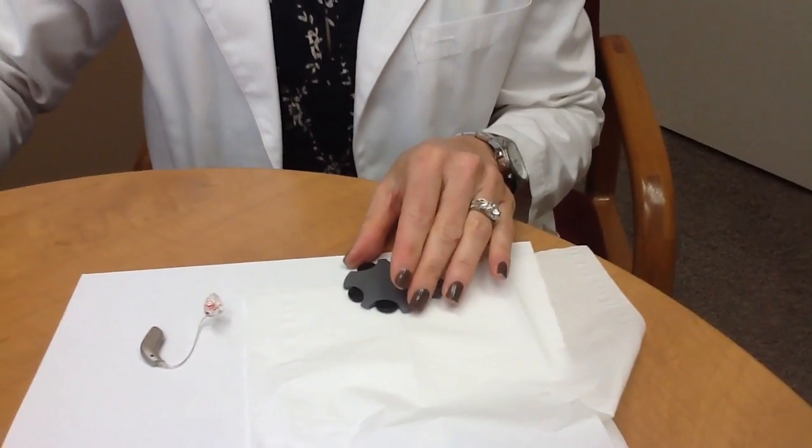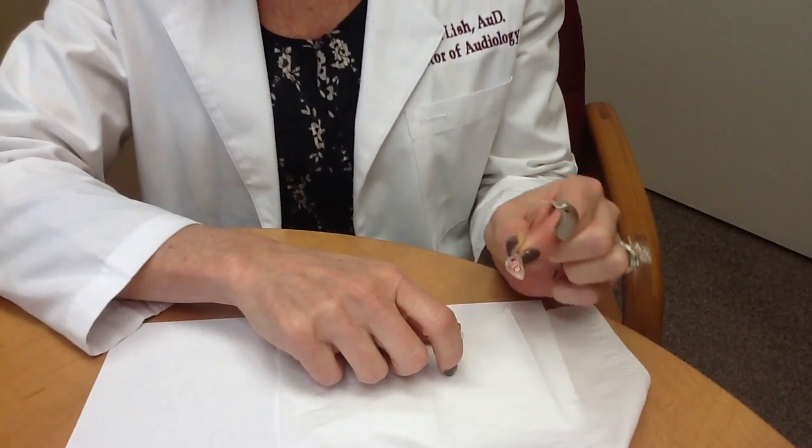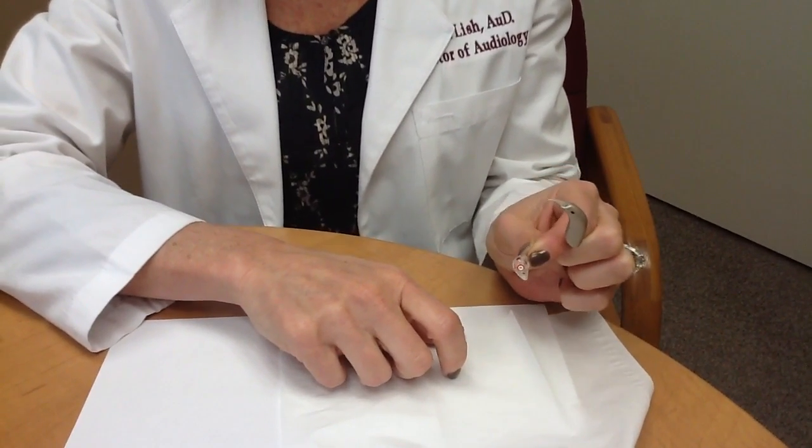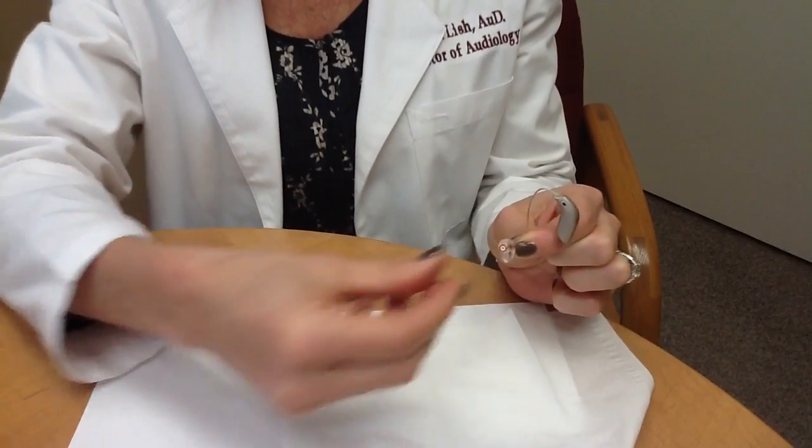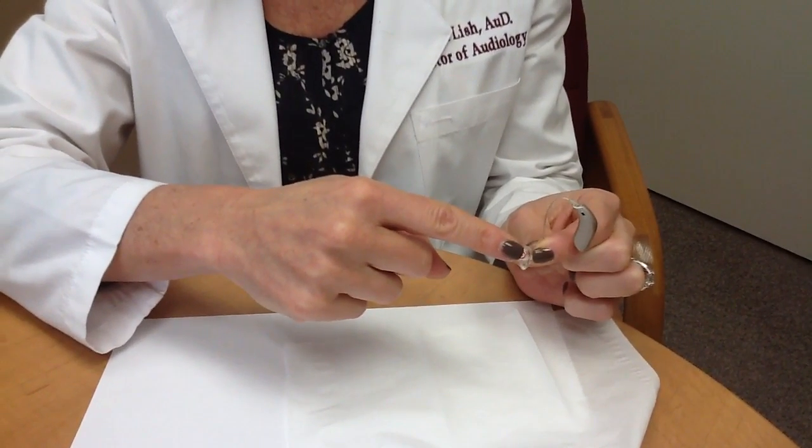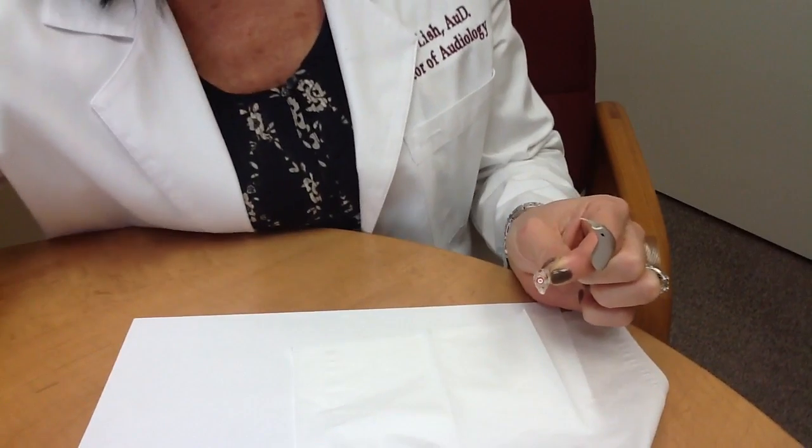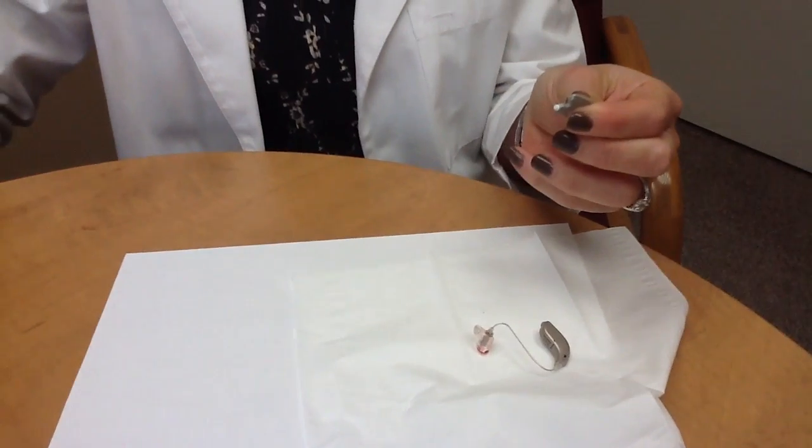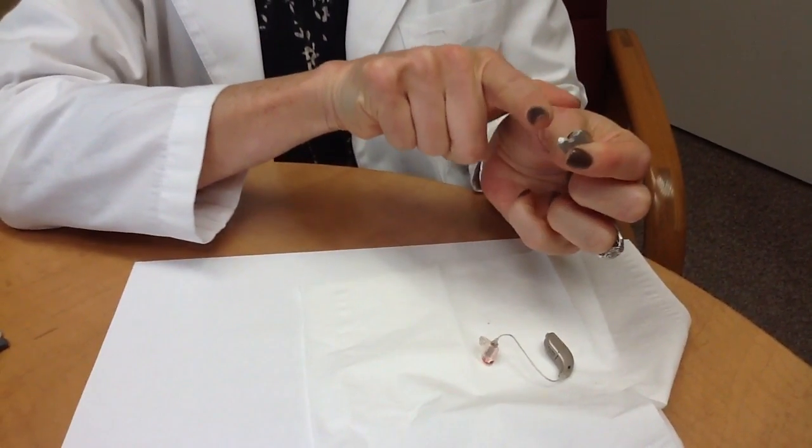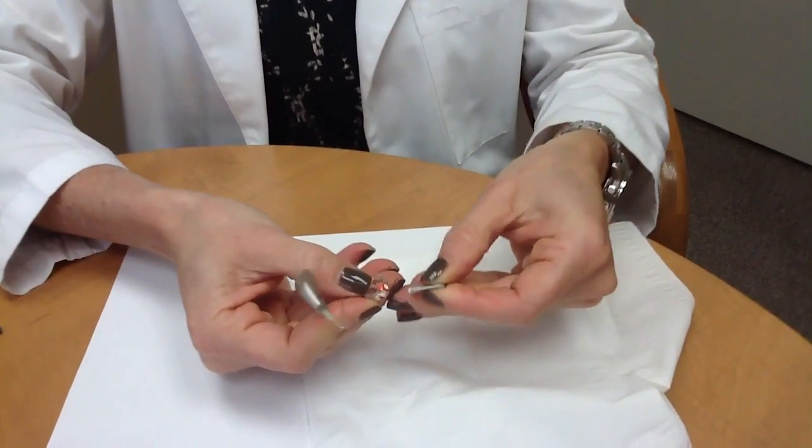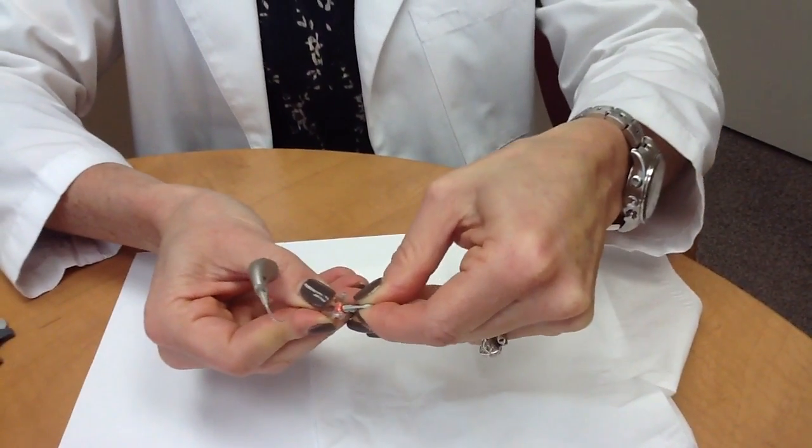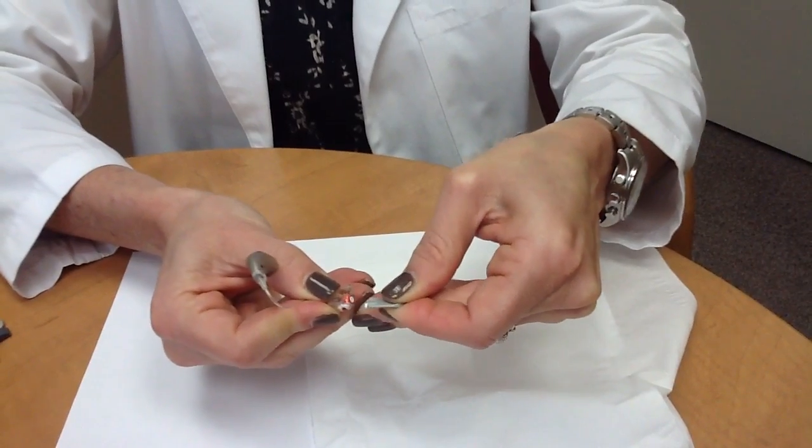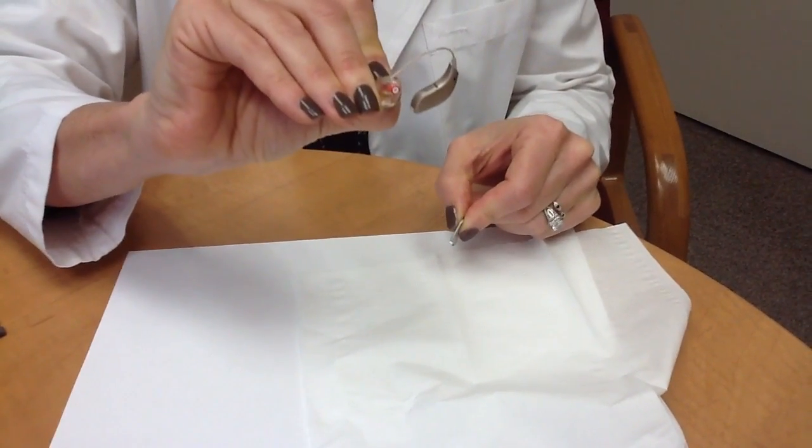The third type I'm going to show you today is how to change the wax guard on a behind-the-ear hearing aid that has an ear mold on the end. It's very similar to the others, except you're not removing the ear mold. You're just changing the tip on the wax guard. This one also has the petal type where you pull this out, you have the removal side and a new one, and you simply push in and pull out, push in and pull out. And now you've just changed it.